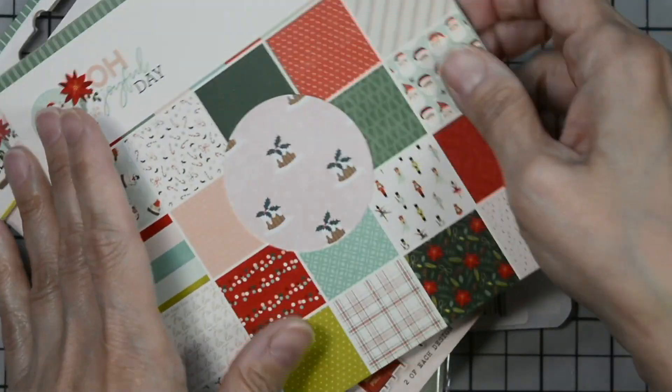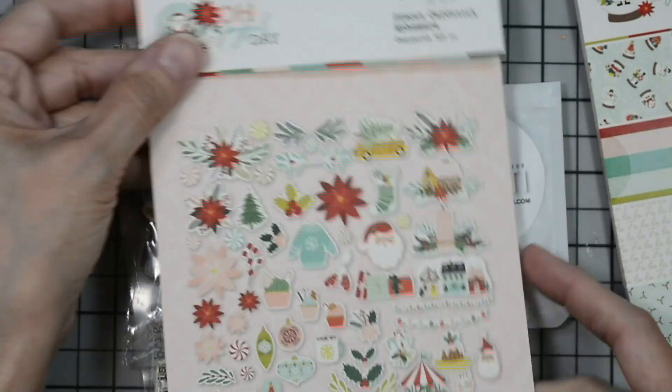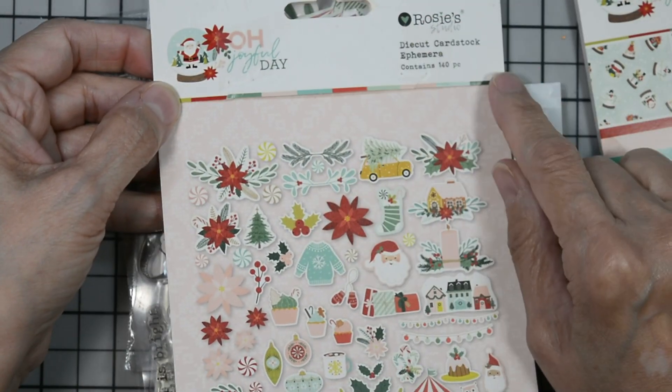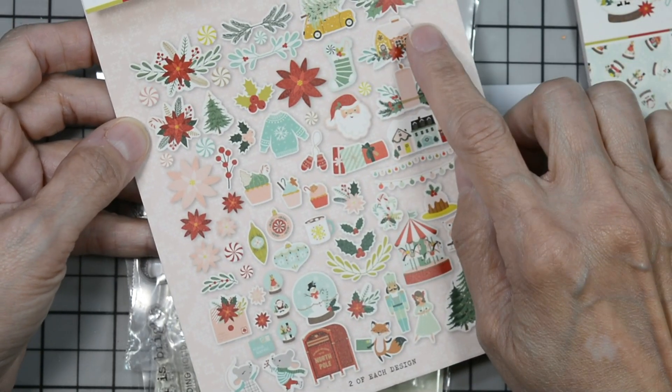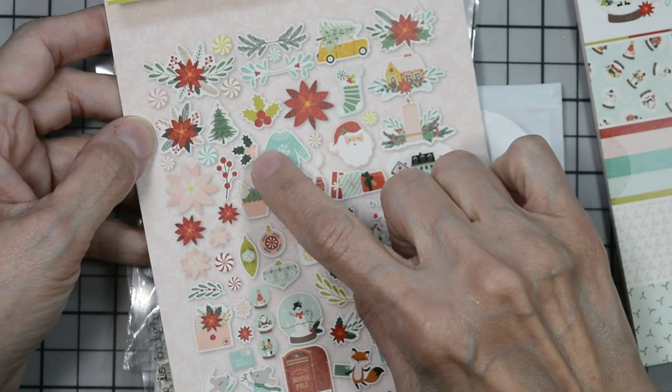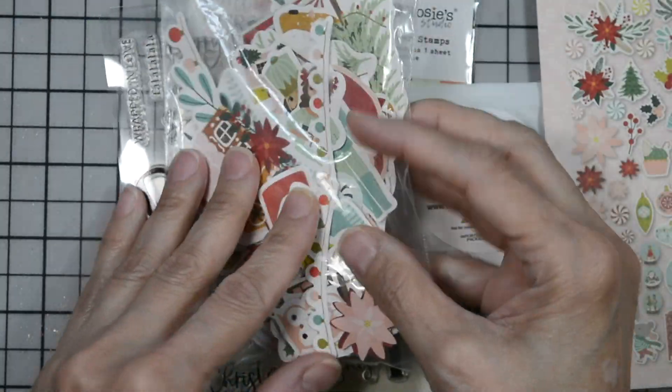Let me open up the cover and you can see it's this one here with the pink and has the figgy pudding and holly berries. The Oh Joyful Day ephemera pack. From the ephemera pack we're going to be using this cute little gingerbread house and the pink holly berries.